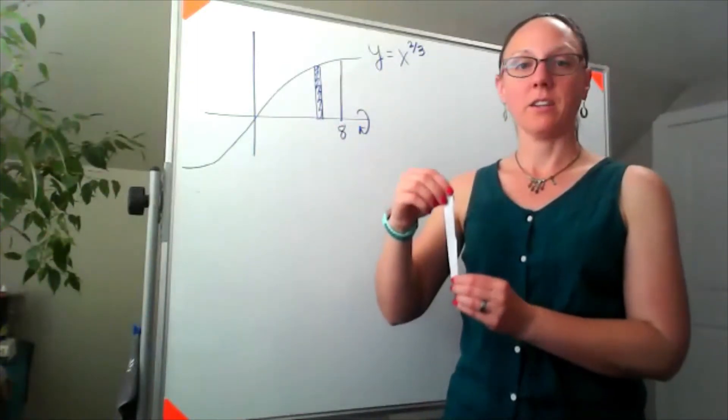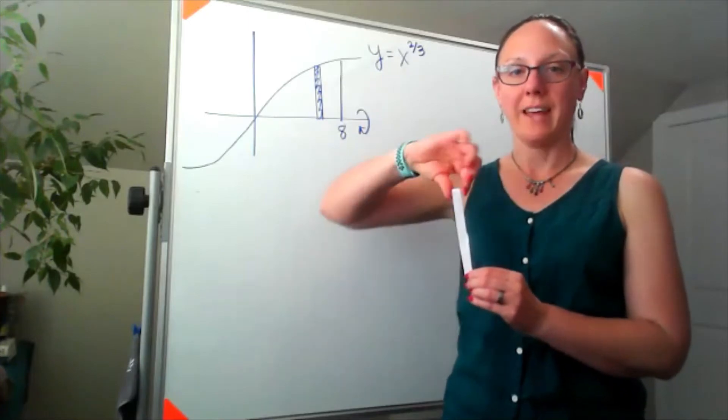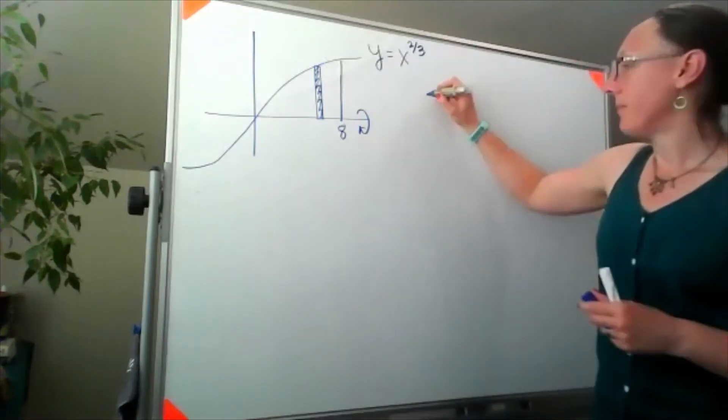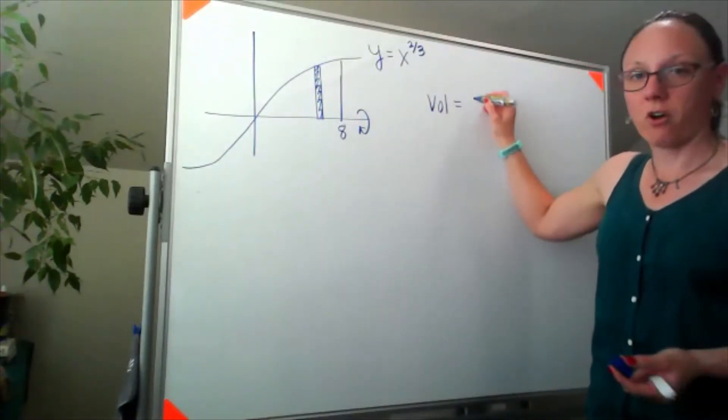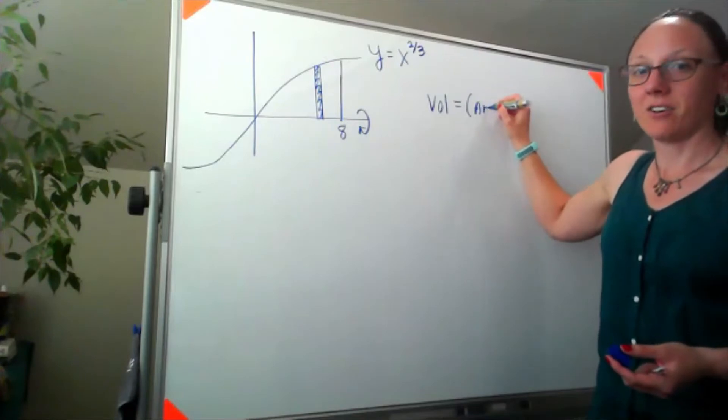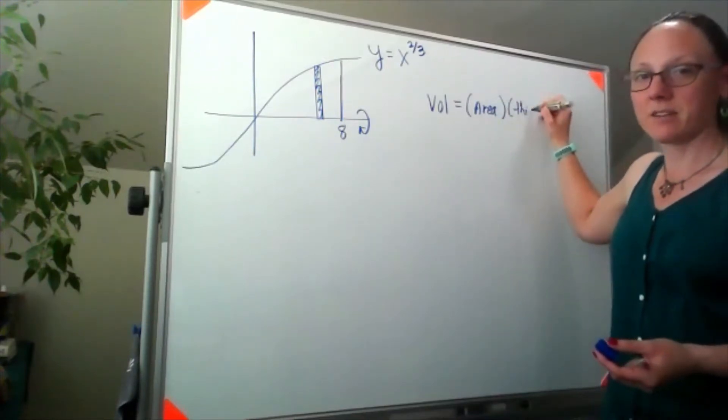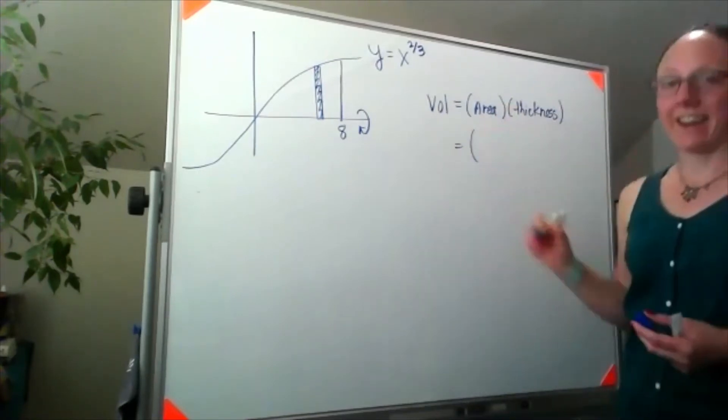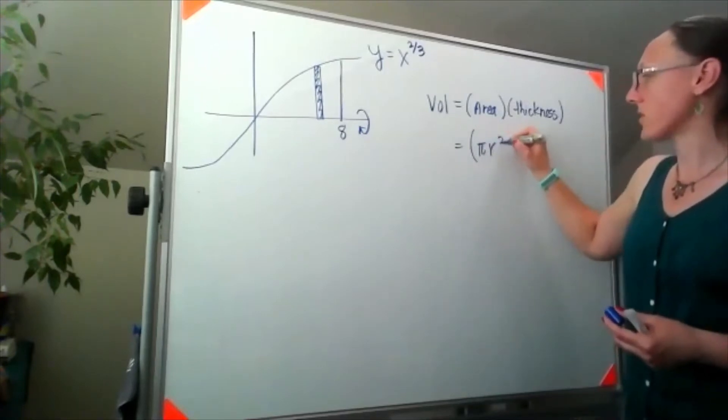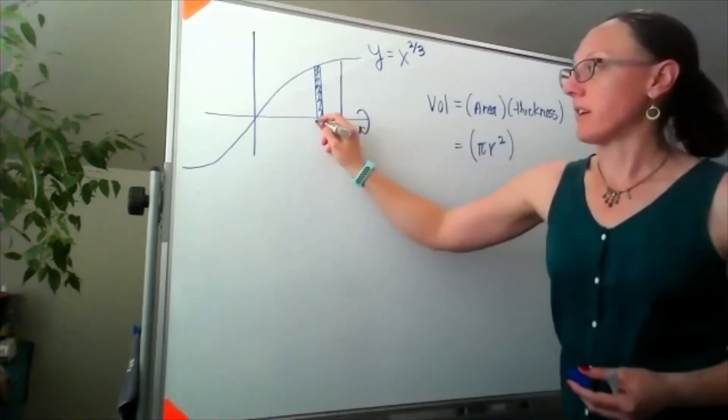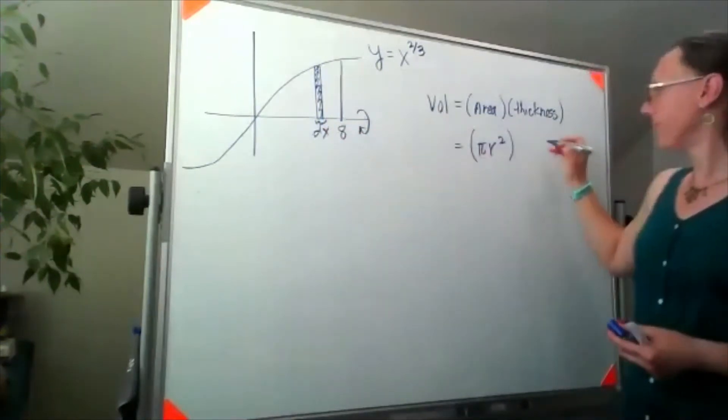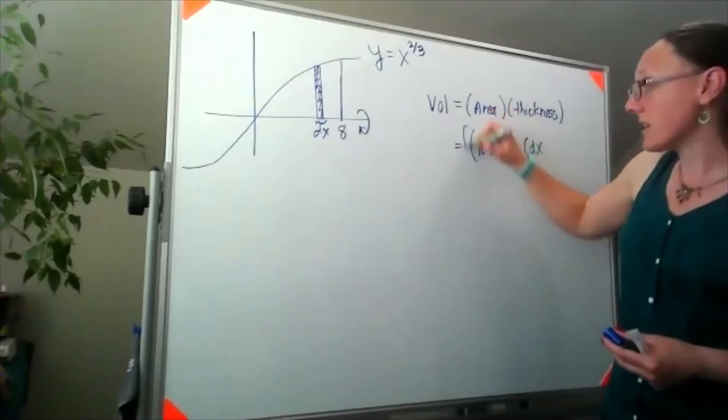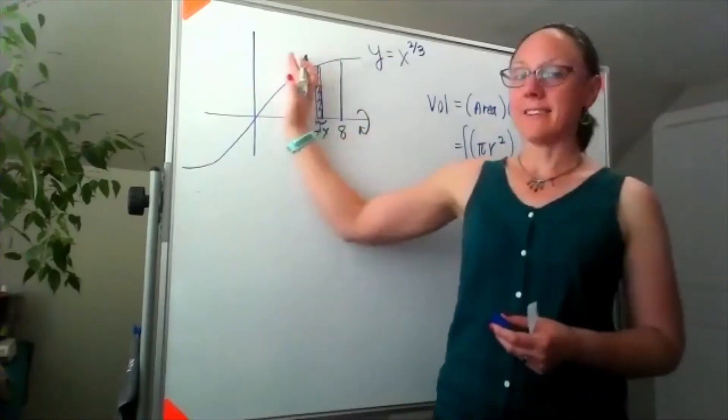If I think about taking this and spinning it around the axis, the shape we form is a circle that has a little bit of thickness, which means our volume is still an area times the thickness. Our area is the area of a circle, pi r squared, and my thickness is a little bit of dx.